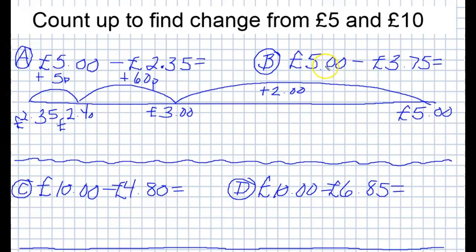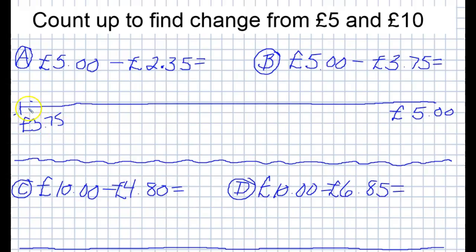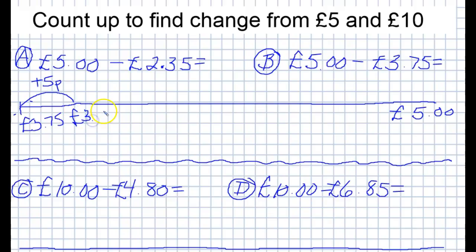So let's try again with five pounds subtract three pounds seventy-five. We're at three pounds seventy-five at this end — remember, we always start with the smaller number over at this end and we have the five pounds over at the other end. I know that if I add twenty-five pence to this it'll take me to four pounds, but let's suppose I didn't know that. I could add five pence, and that takes me to three pounds eighty, and then I could add twenty pence, which would take me to four pounds.